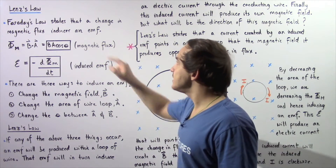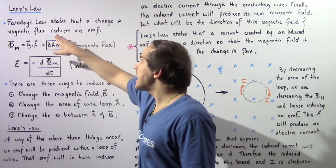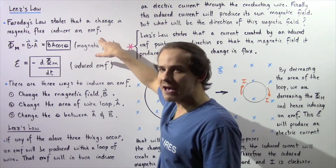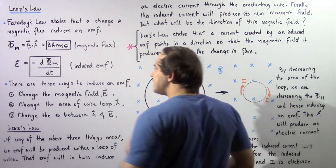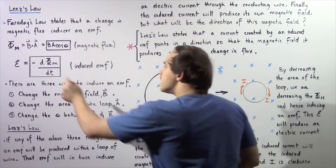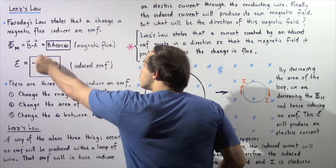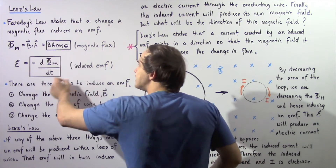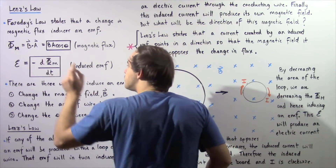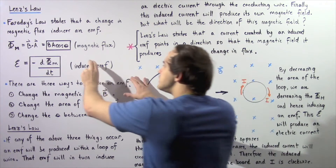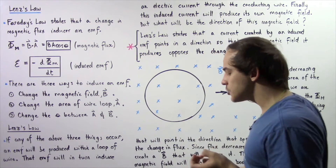Faraday's Law states that whenever there is a change in magnetic flux, that will produce an EMF. The induced EMF is equal to negative the derivative of our magnetic flux with respect to time, which gives us the rate of change of our magnetic flux. If this is zero, then there will be no induced EMF. This equation is known as Faraday's Law of Electromagnetic Induction.